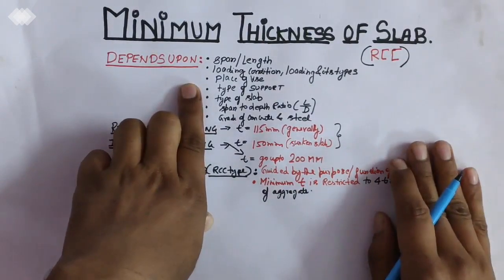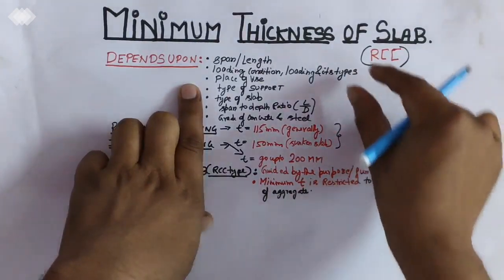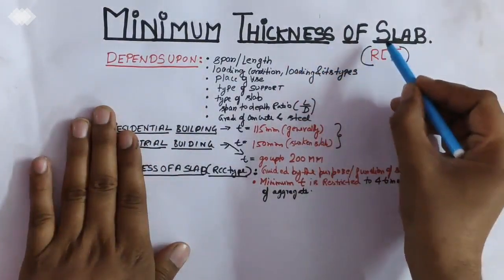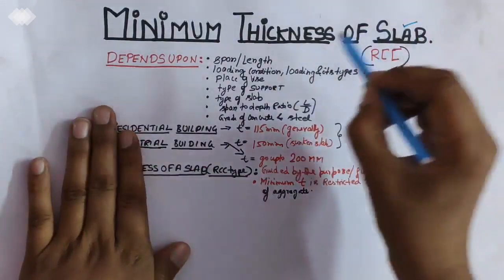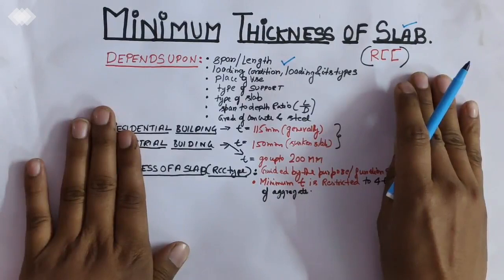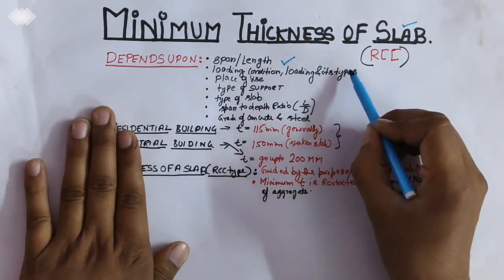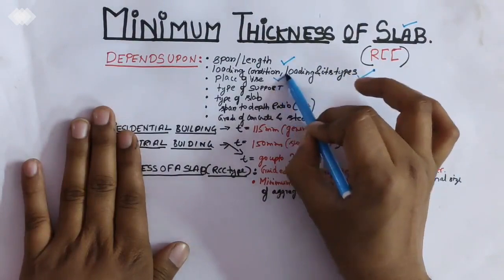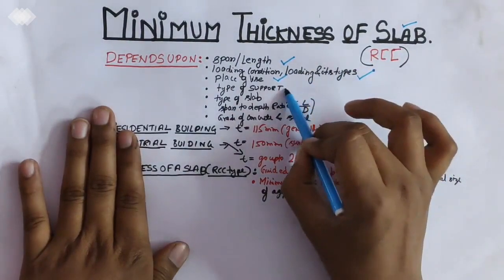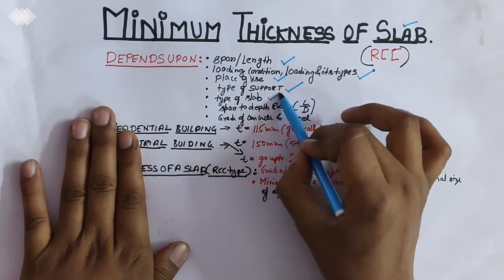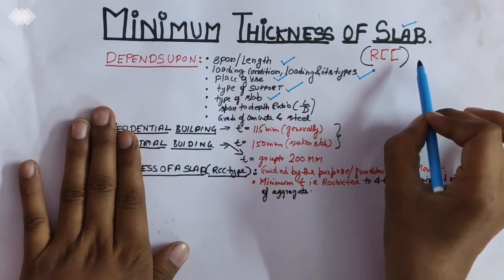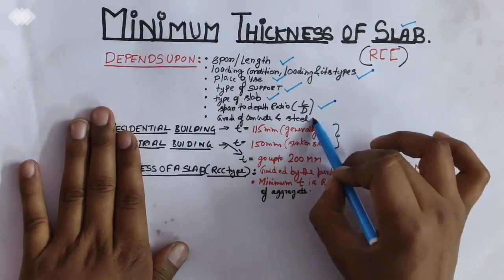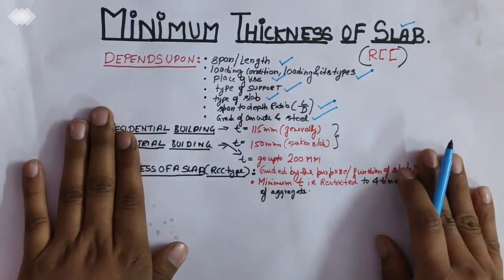First of all I would like to tell you that it depends upon certain factors that I have written down here. So one by one I will discuss. Minimum thickness of slab depends upon the span or length. It also depends upon the loading condition and the loading and its types. The place where it is used. The type of support we are providing. The type of slab we are making or providing to beam and columns. Span to depth ratio, that is L by D value. The grade of concrete and the grade of steel. So these are the factors.